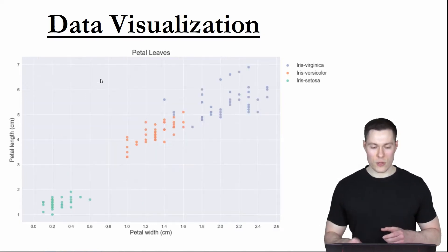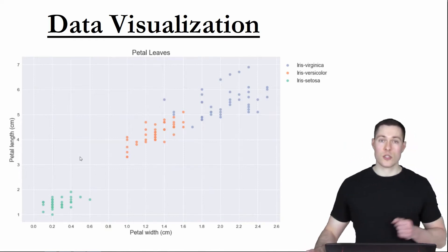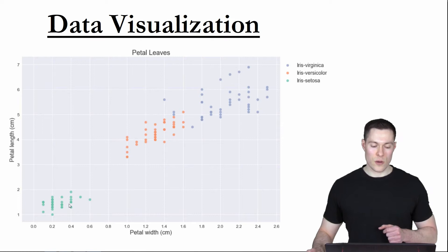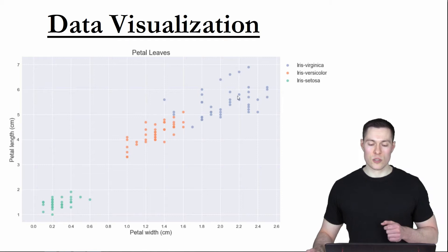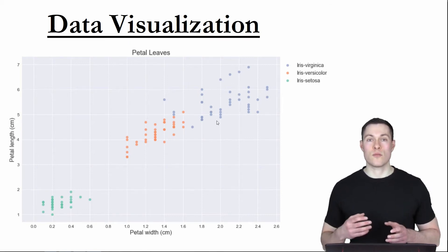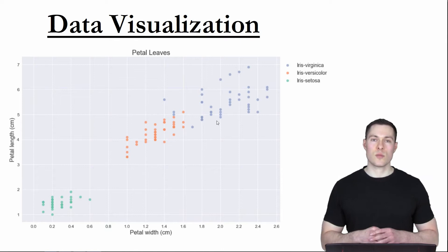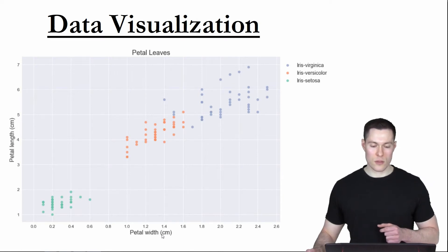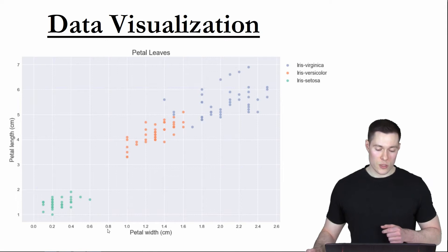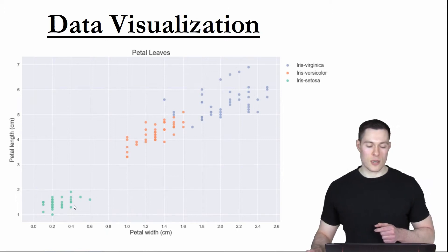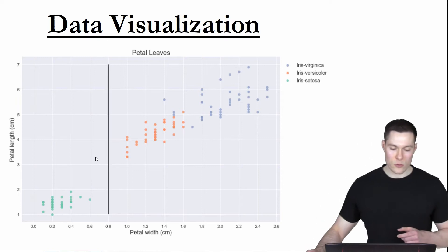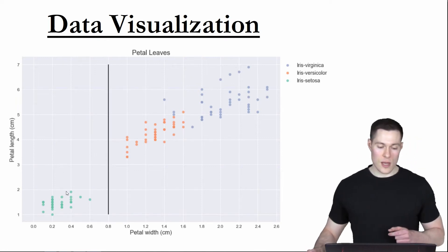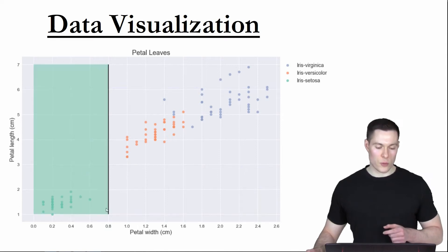So let's look at the petal leaves. Here the situation looks much better because the iris setosa flowers are also clearly distinguished from the other two types, and additionally the versicolor and virginica flowers are more clearly separated from each other. So let's stick with this plot for deriving some rules. One obvious first rule might be: check the petal width of the flower, and if it is smaller than 0.8, then the flower clearly is an iris setosa. So let's add that decision boundary, and since all the dots to the left of this line are green, let's shade the whole area with a green color.